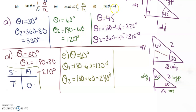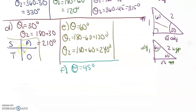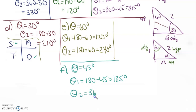The last one — tan θ equals negative 1 over 1. When is opposite and adjacent both 1? Obviously 45 degrees. So θ equals 45 degrees as the related acute angle. Because tan is negative in the C quadrant and the S quadrant, θ₁ equals 180 minus 45, which is 135 degrees, and θ₂ equals 360 minus 45, which is 315 degrees.